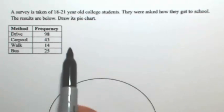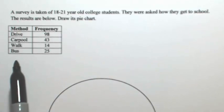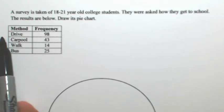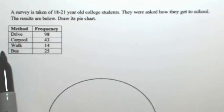So in this chart, we're given four different methods in which these students take to get to school. So we have driving, carpooling, walking, and taking the bus.